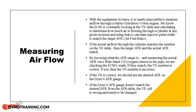The ECM looks at the VE cell that aligns with the throttle position and engine RPM that we are currently running in, then the ECM looks at the air conditions — temperature, pressure, humidity — to determine how much oxygen is entering the combustion chamber. With that information the ECM calculates how long to leave the injector open to achieve the target air-fuel ratio from the air-fuel ratio table.